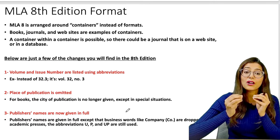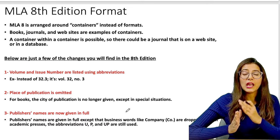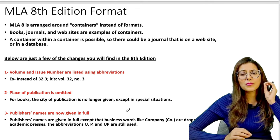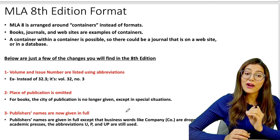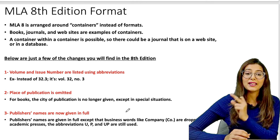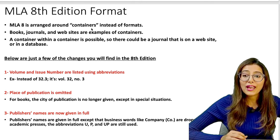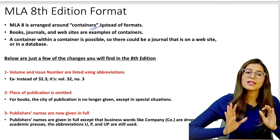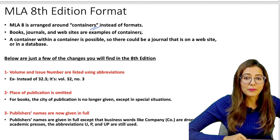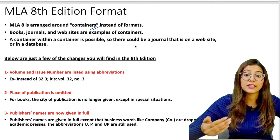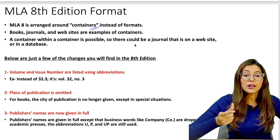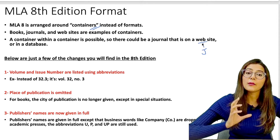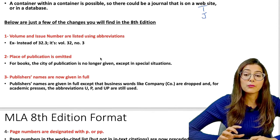Now MLA 8th edition format. This is a complex and long topic. MLA 8 is arranged in containers — books, journals, and websites are examples of containers. You can find containers within containers in the 8th format. For example, if you have a quotation from a journal that is on a website, you name both the website and the journal title. Some important things to remember in the 8th edition: volume and issue number are listed using abbreviations — VOL for volume, and NO for number.